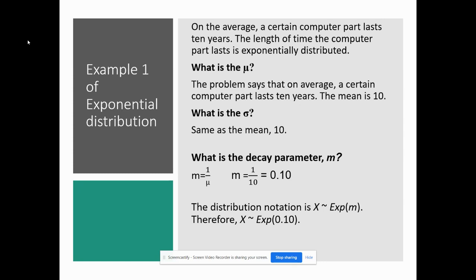What is the mean? Well, the problem says on average a certain part lasts 10 years, so that's the mean. It says what is the standard deviation? Remember again, the mean and the standard deviation are the same thing, so it's 10. What is the decay parameter, m? So m equals 1 divided by the mean, so m equals 1 divided by 10 equals 0.10.